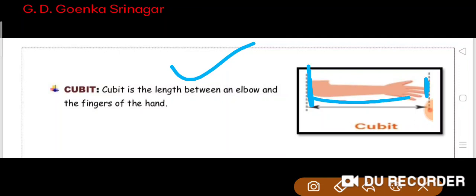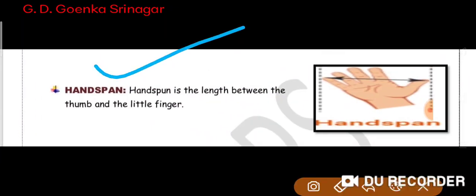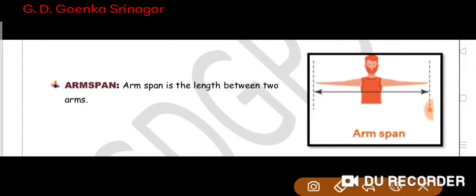Then we have hand span. You can just expand your hand — the length between the thumb and the little finger is the hand span. You can measure your laptop or your mathematics or English book with the help of the hand span.